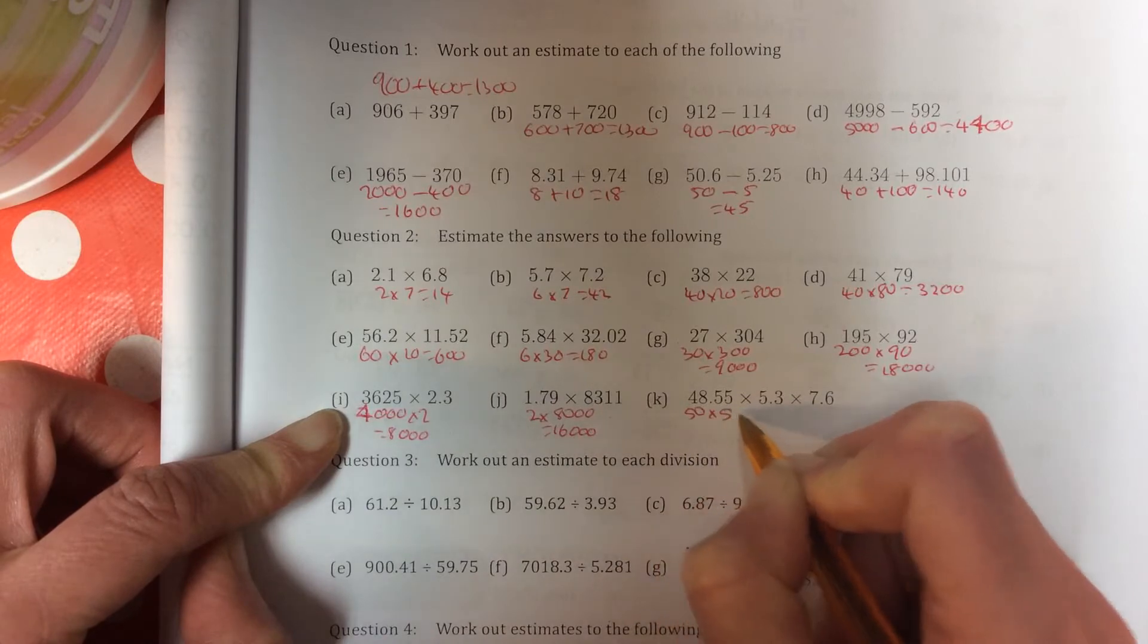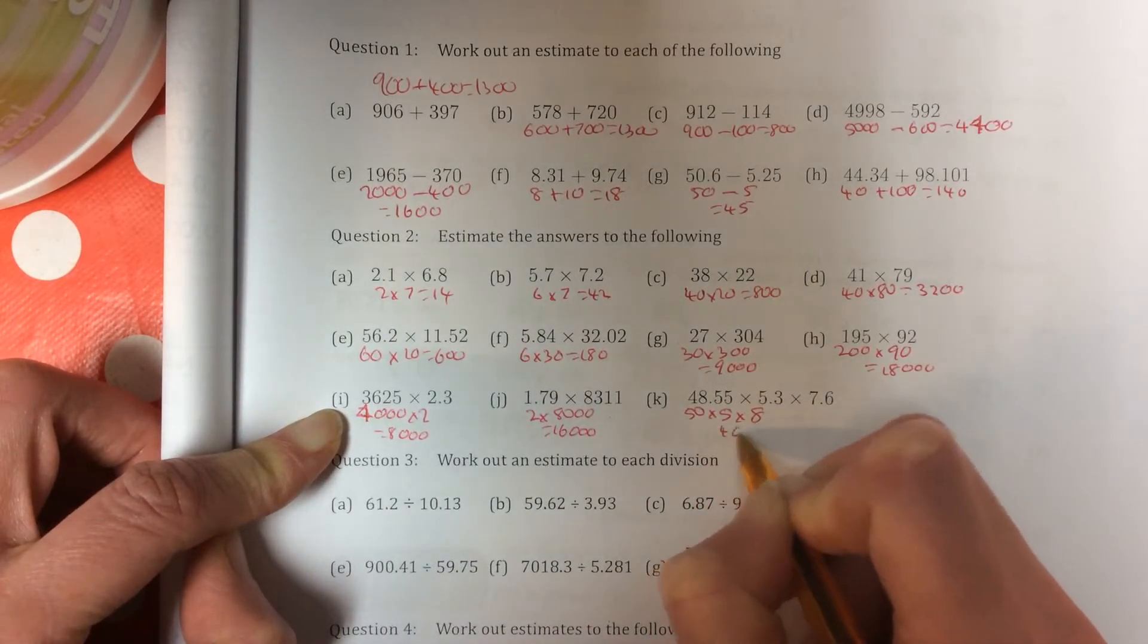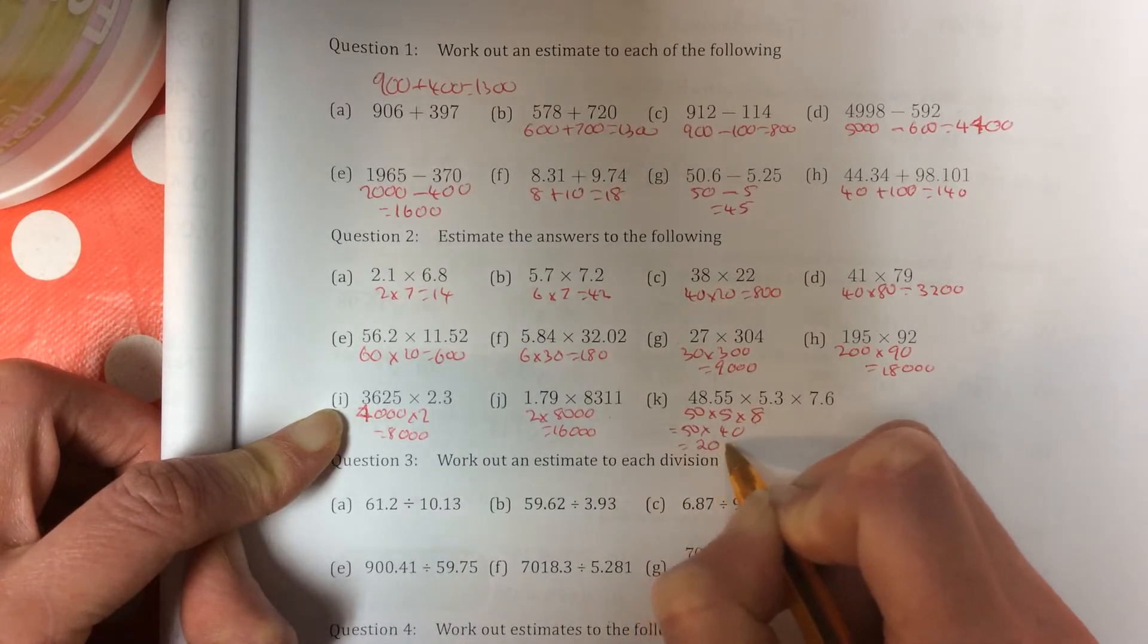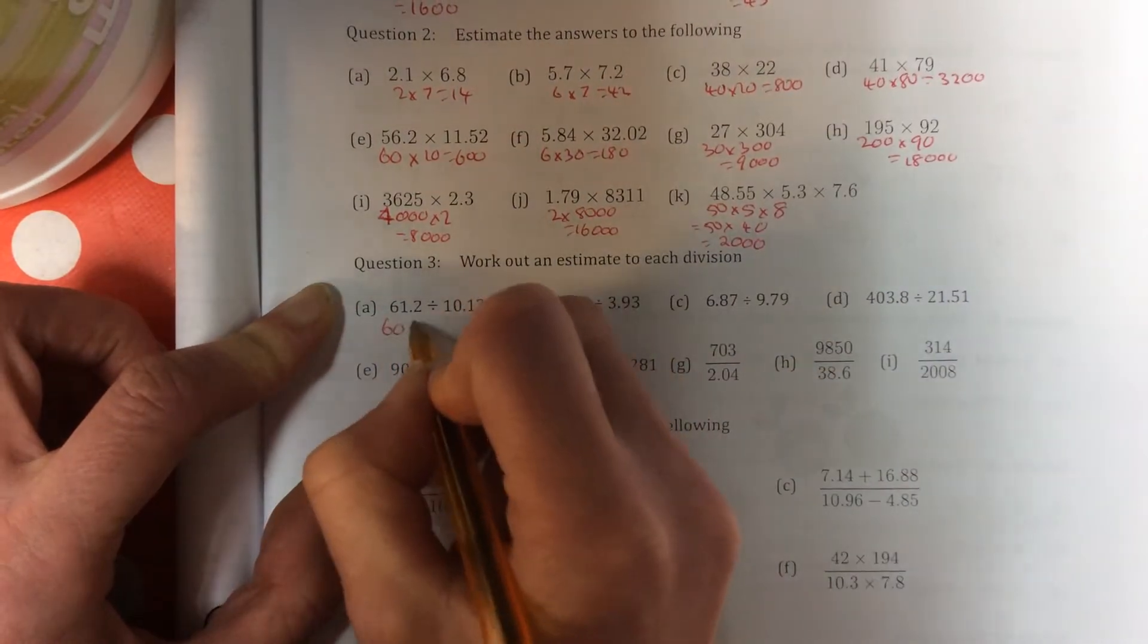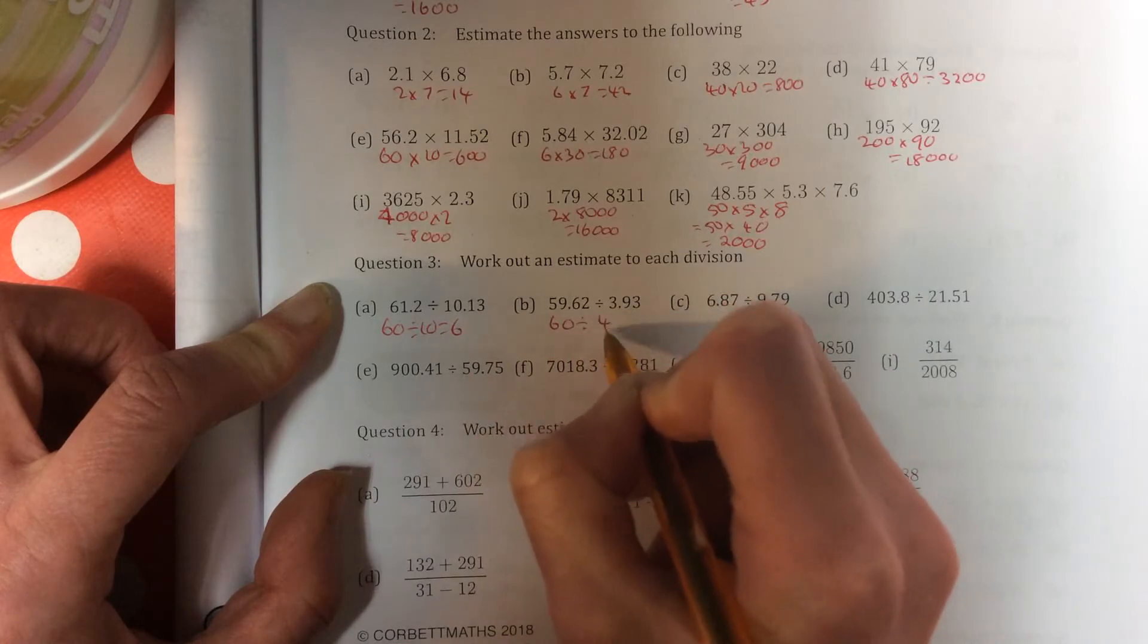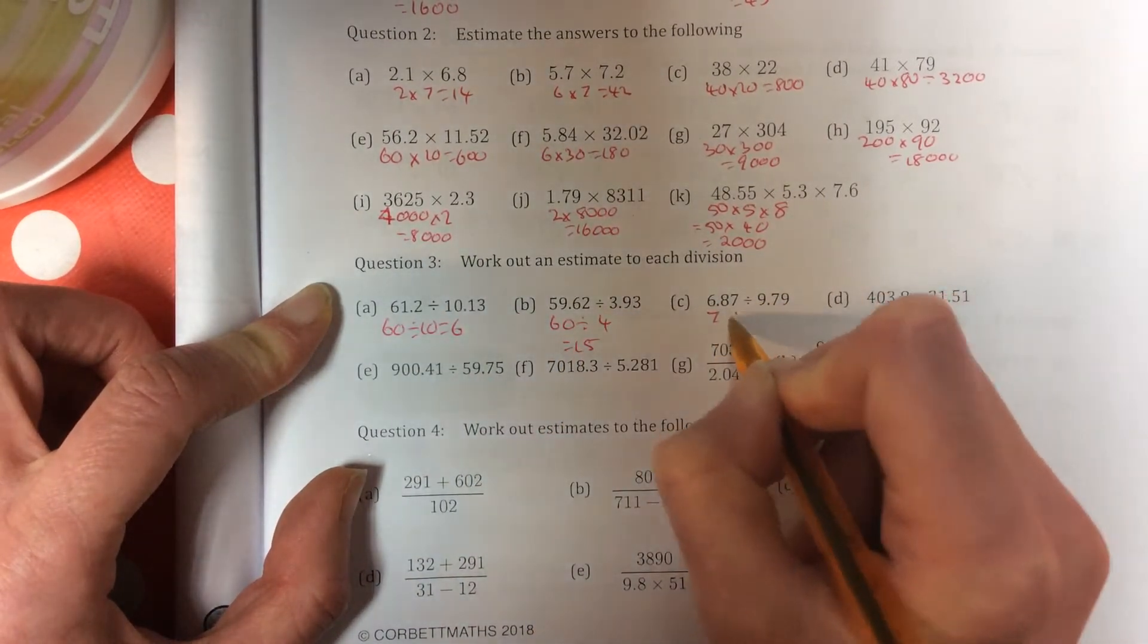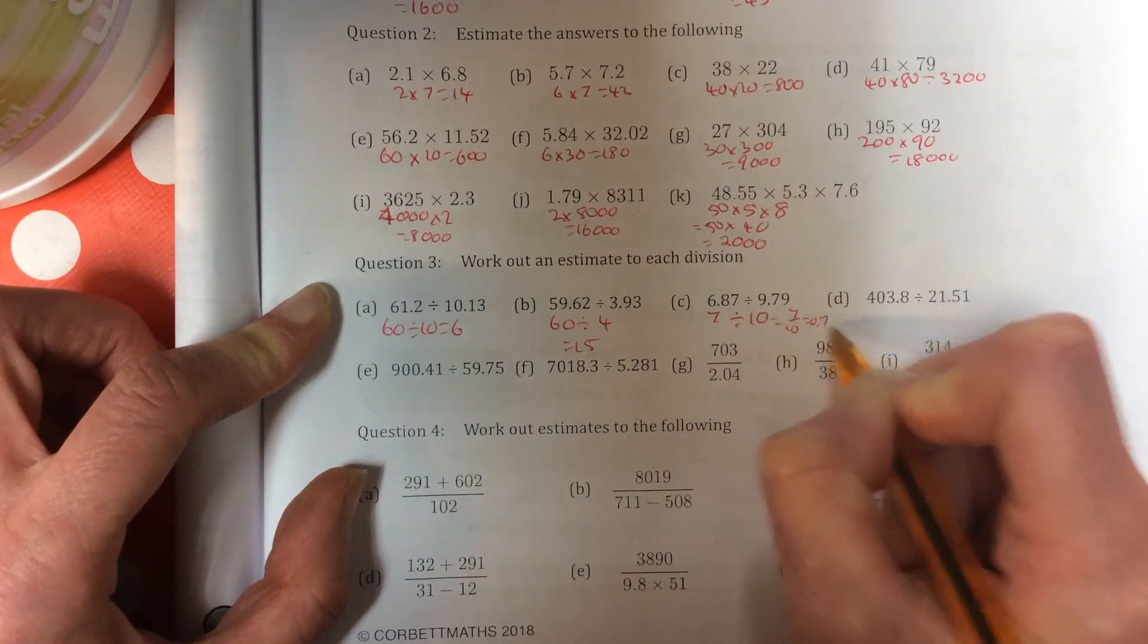50 times 5 times 5 times 8. So you go 5 times 8 is 40. 50 times 40. 5 4's are 20, and put down 2 noughts. Question 3. 60 divided by 10 is 6. 60 divided by 4 is 15. 7 divided by 10, that's just 7 tenths or 0.7.